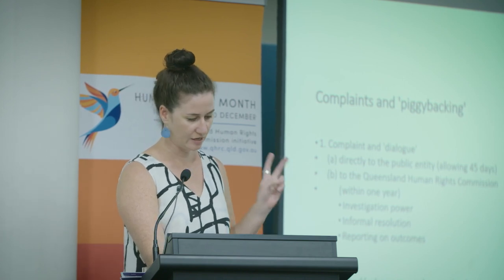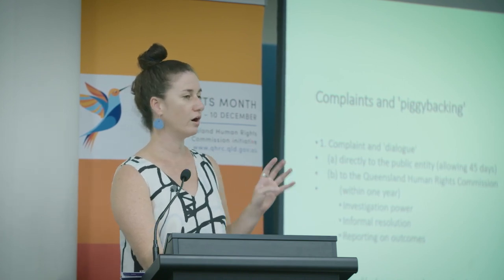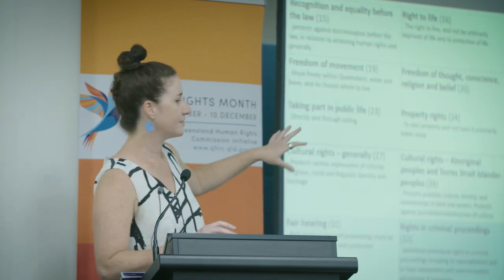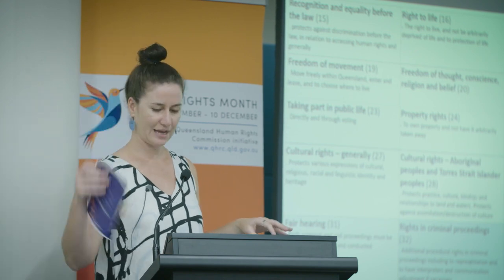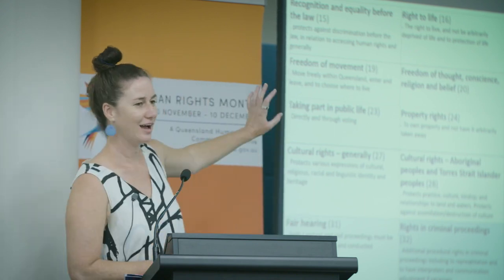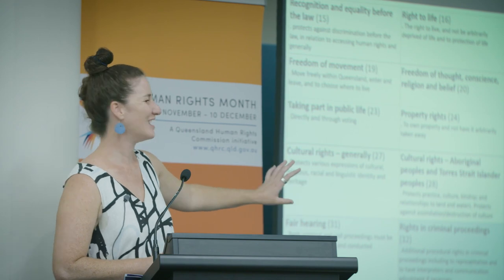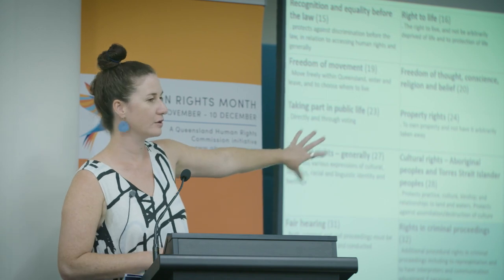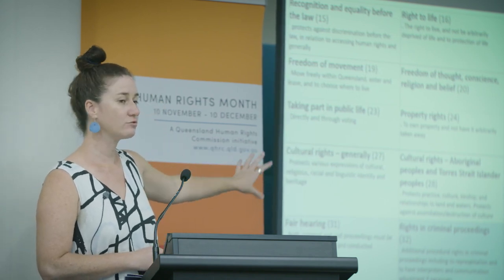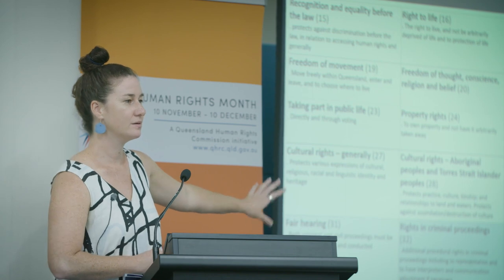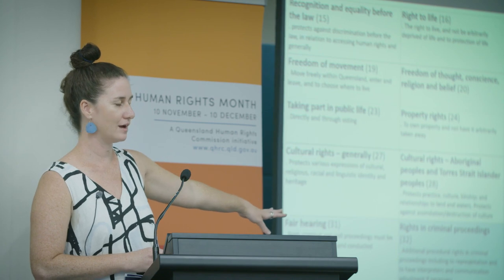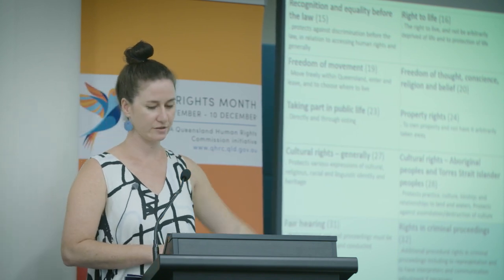Now that we understand a little bit of the operative functioning of the Act, I want to go through four of the rights so you can see the scope. You have this in your publication as well. The ones shown in blue are primarily related to the justice system or criminal justice system. The two in pink at the bottom are the social and cultural rights we have — the right to education and healthcare in Queensland.